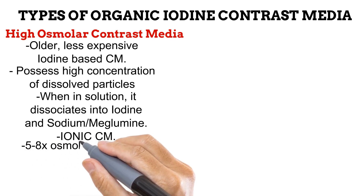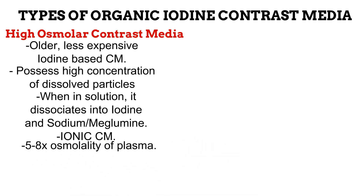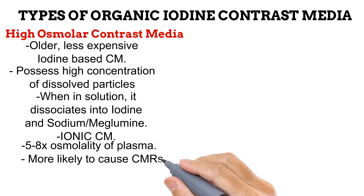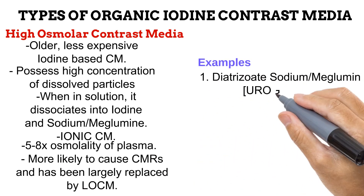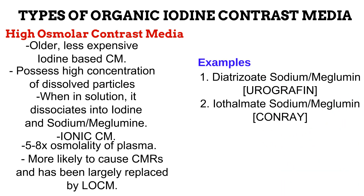High osmolar contrast media have an osmolality that is 5 to 8 times greater than the body fluid, plasma. As explained, this type has a higher chance of causing contrast media reactions, which is why it has been replaced by low osmolar contrast media in many radiographic examinations. Examples of high osmolar contrast media include diatrizoate sodium or diatrizoate meglumine, commonly marketed as Urografin, and iothalamate sodium or iothalamate meglumine, commonly marketed as Conray.